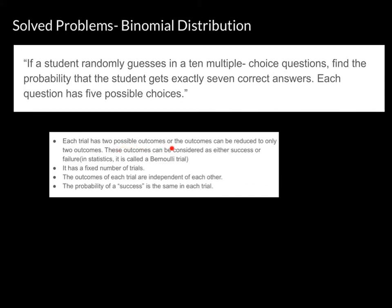According to those characteristics, for a distribution to be binomial, first, each trial must have only two possible outcomes — or the outcomes can be reduced to two. These outcomes are considered either a success or a failure. In this example, when we answer a multiple choice item, it's either we get the question right or we get it wrong. There are only two possible answers: you get it or you don't. So the first condition is satisfied.